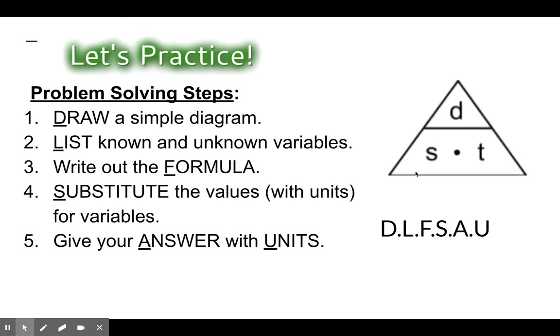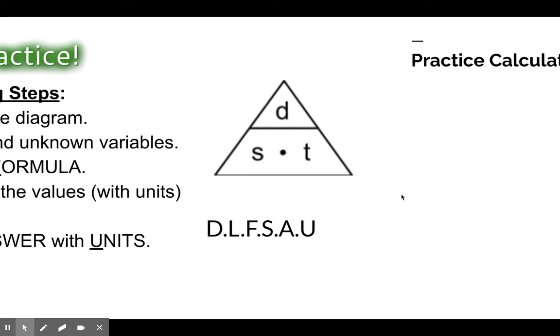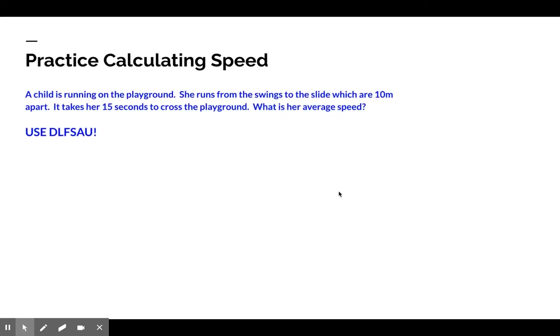Here is our new triangle. Speed equals distance over time. If I cover up one thing, it leaves me with the other two. If I cover up time, I get distance over speed. If I cover up distance, I get speed times time. Let's take a look at a practice problem. A child is running on the playground. She runs from the swings to the slide, which are 10 meters apart. Takes her 15 seconds to cross the playground. What is her average speed? Use DILF-SAU. Please pause the video now.